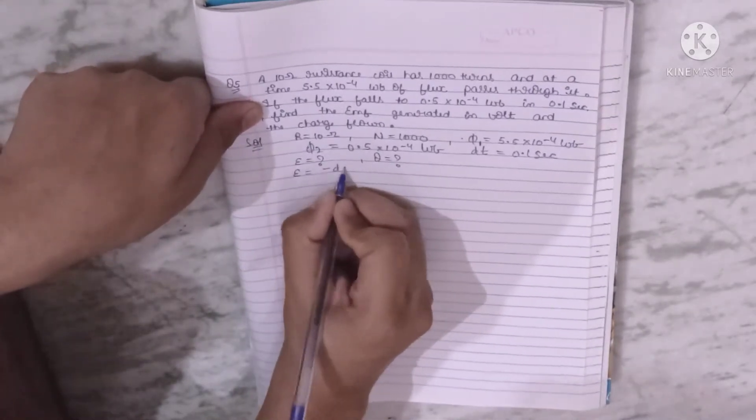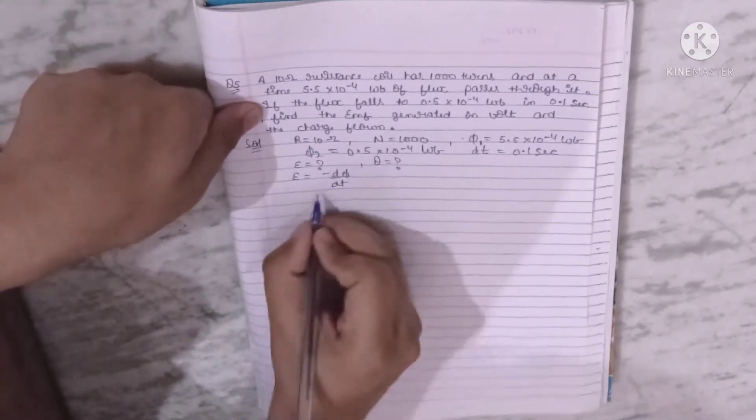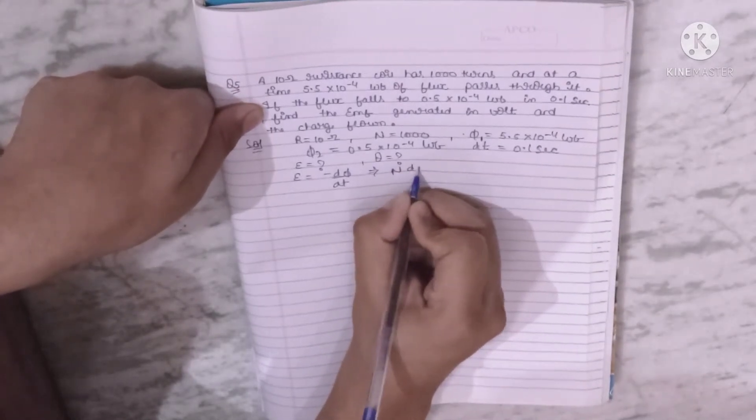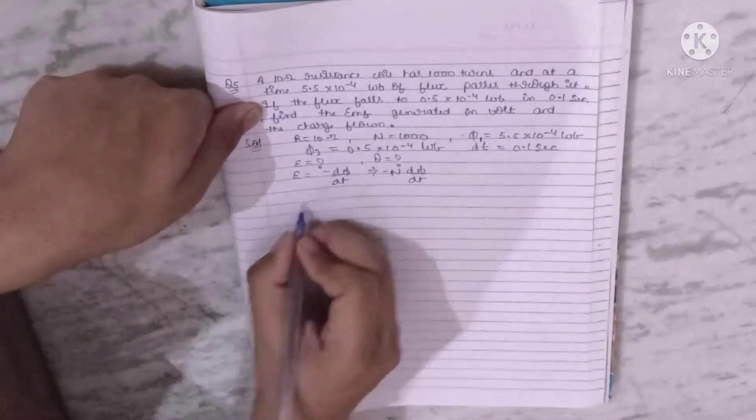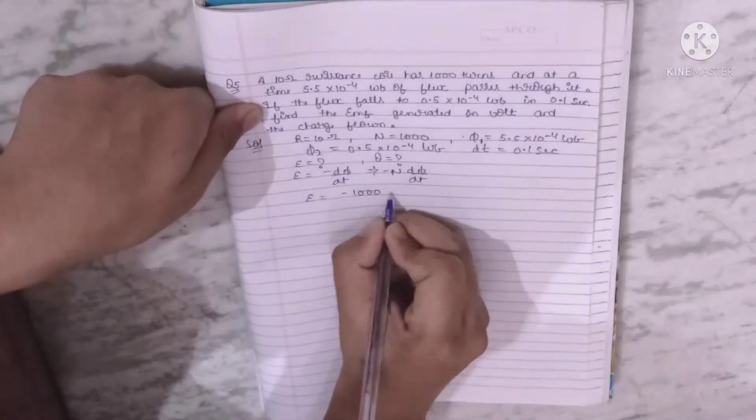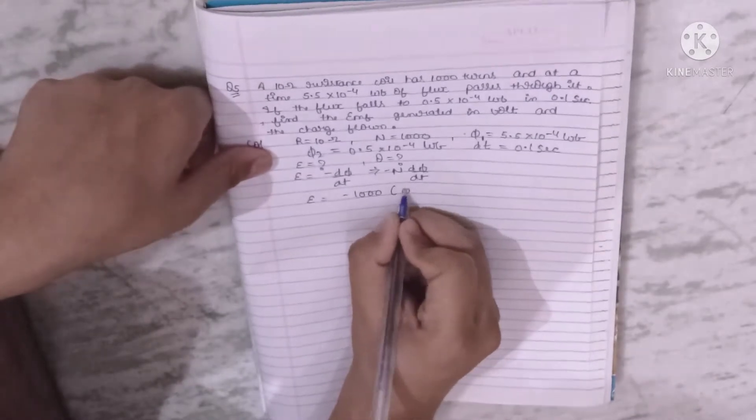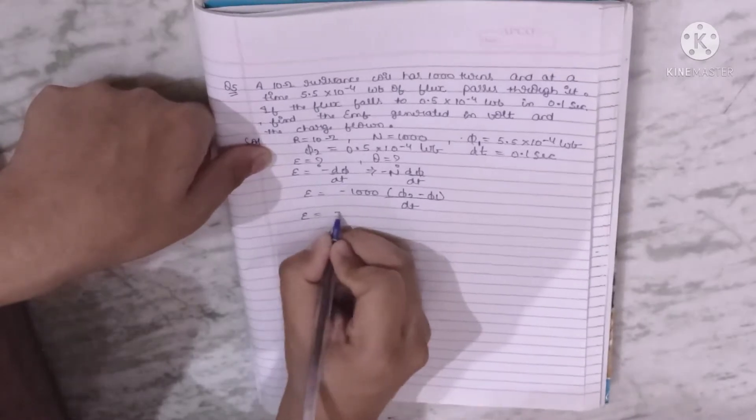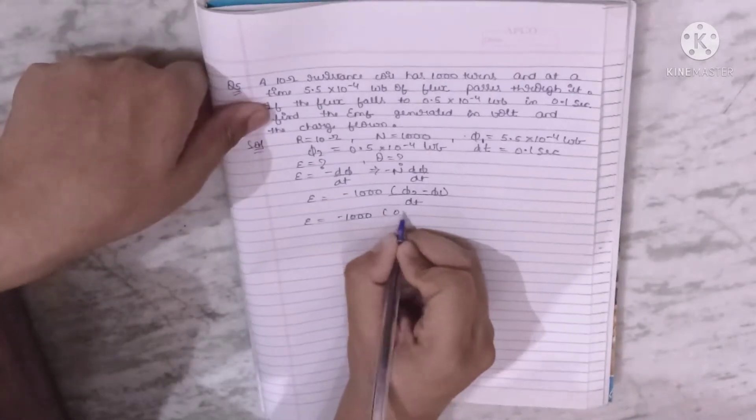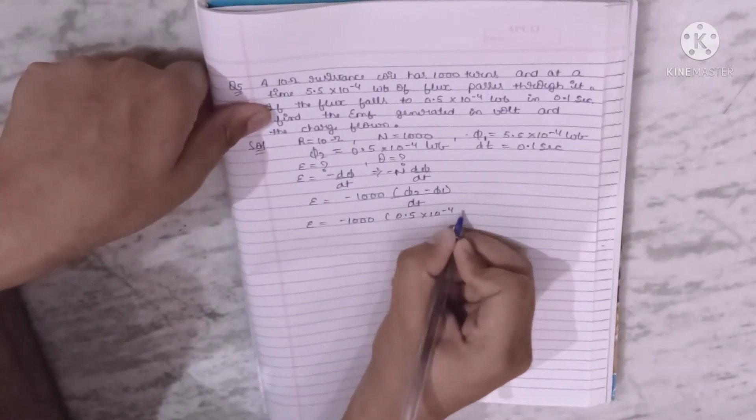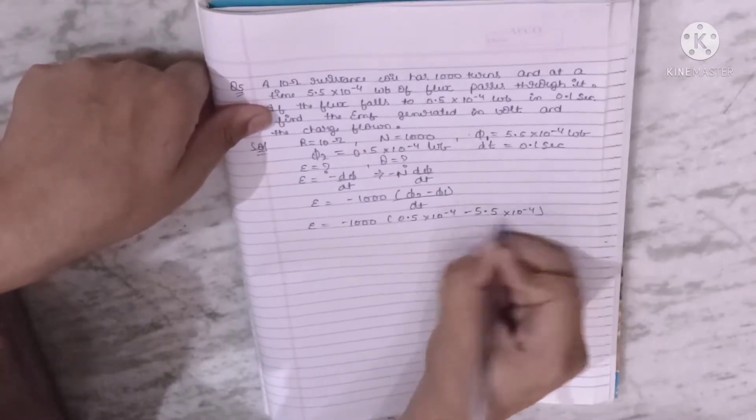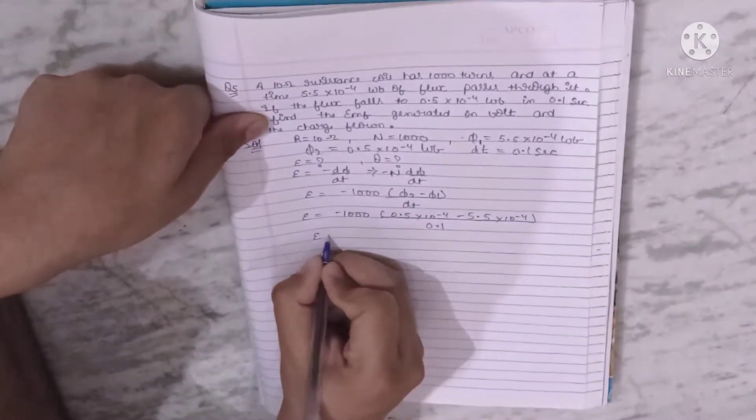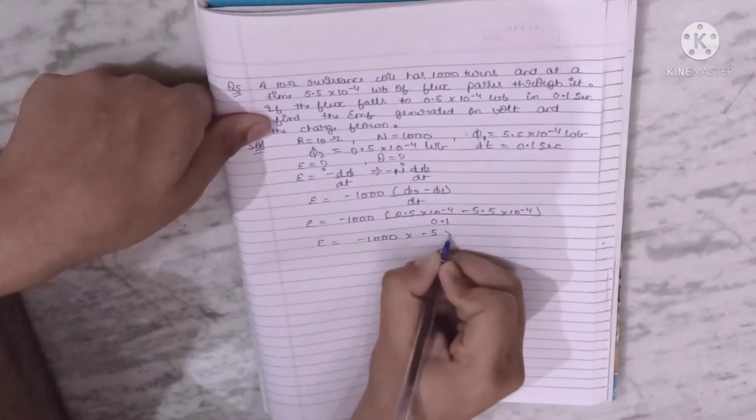Induced EMF formula is minus d phi by dt. For N number of turns, this formula is minus N d phi by dt.